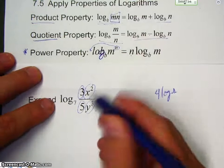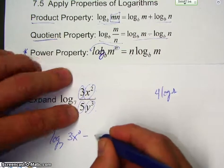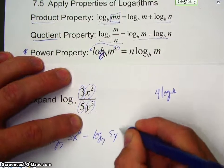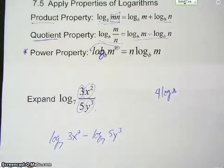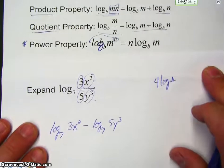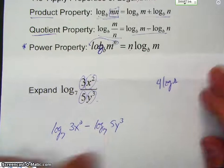So, let's do the quotient first. Take the log base 7 of the top, minus log base 7 of the bottom. So, I'm going to apply the quotient property.